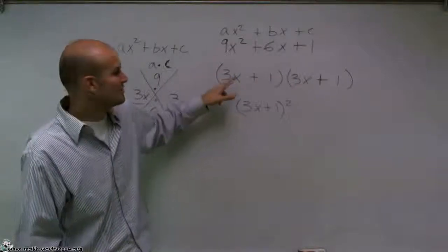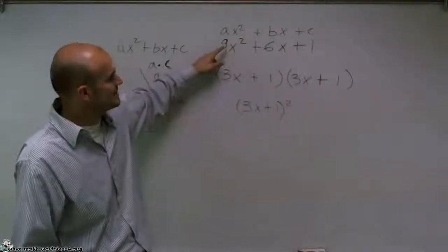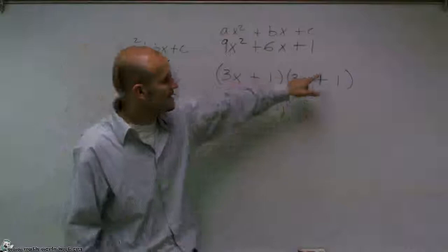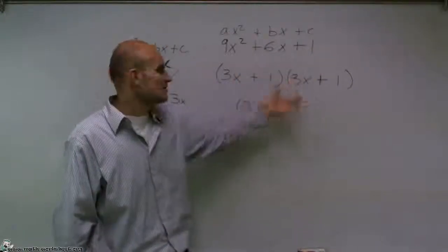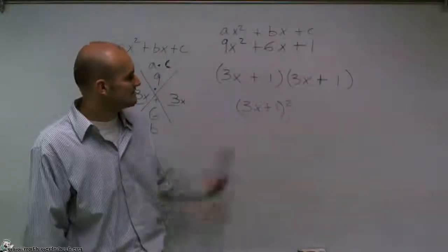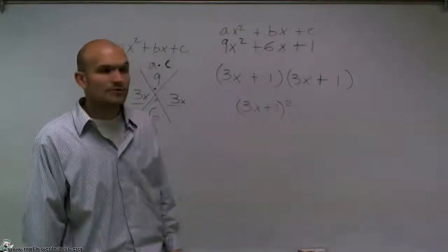If I check this by foiling, 3x times 3x gives me 9x². 1 times 1 is going to give me 1. And then when I foil out my middle terms, we're also going to add up to 6x. And I'll reduce it down to (3x + 1)².